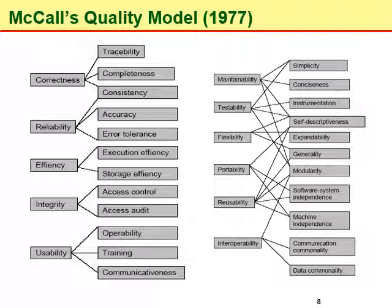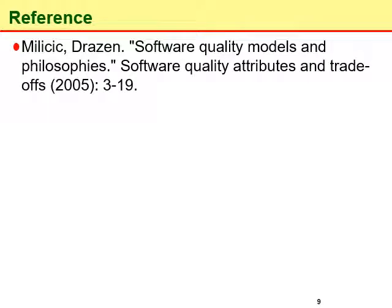That's all about our discussion on McCall's quality model. In the next video of this lecture, we will discuss the remaining models. The materials in this video are based on the chapter titled 'Software Quality Models and Philosophies,' published in the book 'Software Quality Attributes and Trade-offs.' For more details, you can consult the book. Thank you.